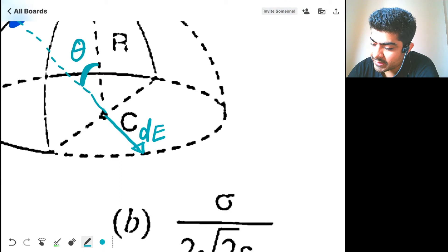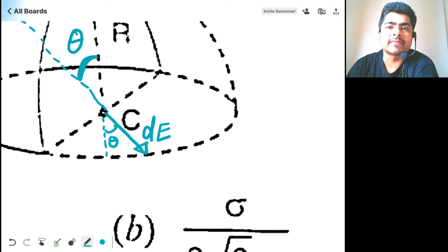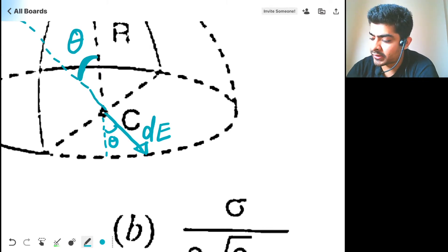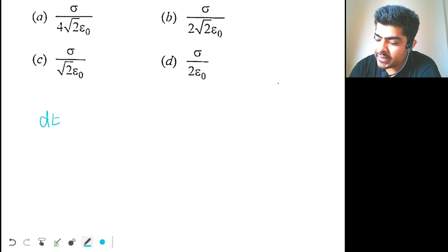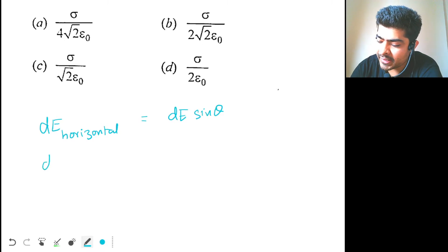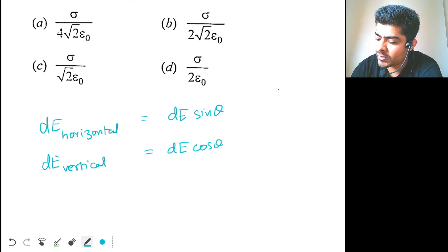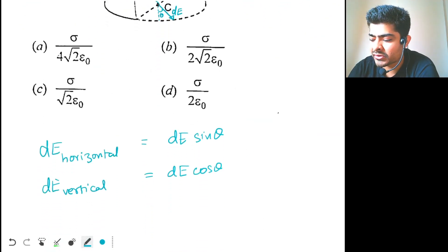This electric field is also making angle theta with the vertical. So I will write two components: dE along horizontal and dE along vertical. Horizontal will be dE sin theta, and dE along vertical will be dE cos theta. Angle with the vertical is theta, so vertical component will be dE cos theta.